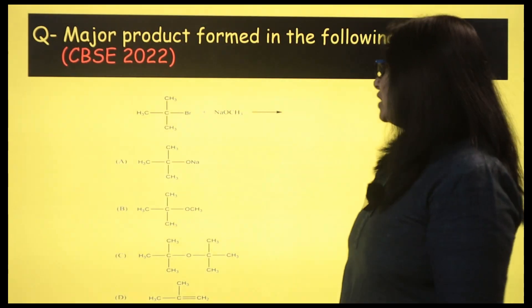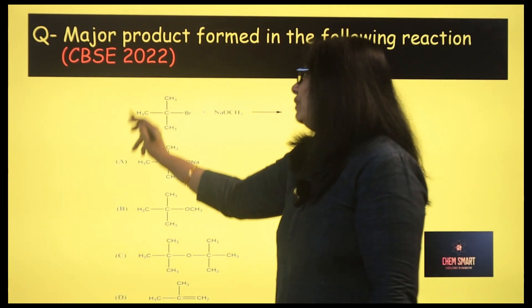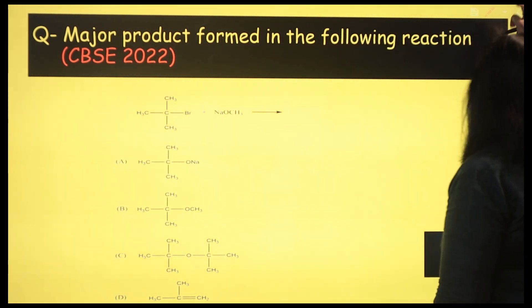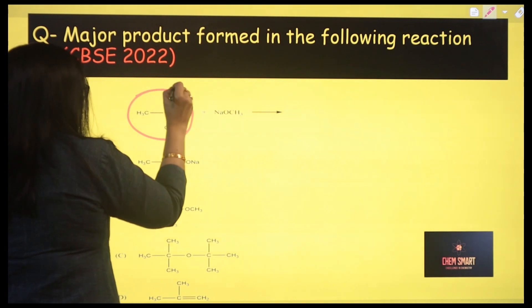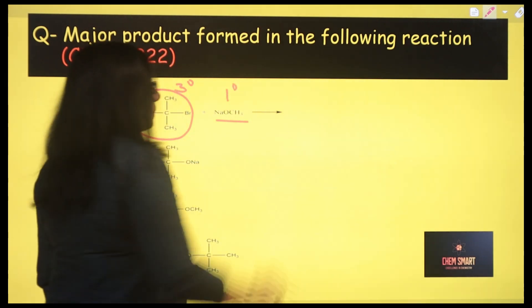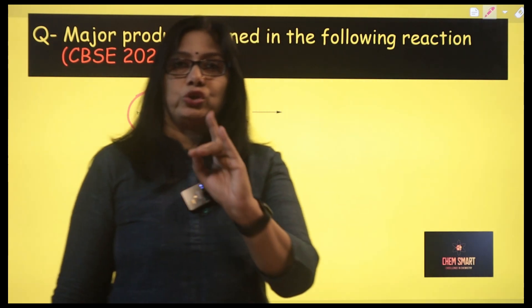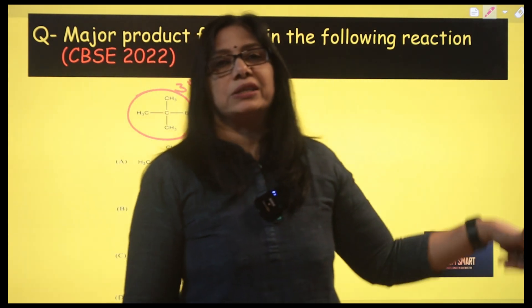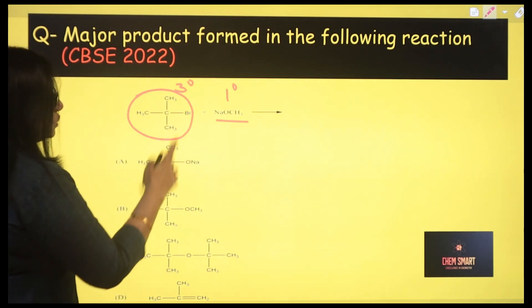The major product formed in the following reaction — use the concept of Williamson synthesis. Here the alkyl halide is tertiary and the alkoxide used is primary. Notice it properly: tertiary butyl bromide is the alkyl halide, which is tertiary, whereas the alkoxide is primary. In Williamson synthesis, the alkyl halide used should be primary. If it is tertiary, you will not get an ether — as I told you in previous sessions. These are the options given to you, so what will happen?